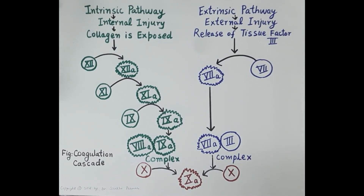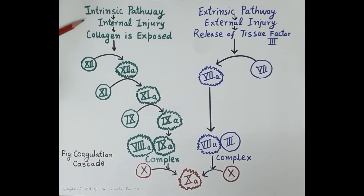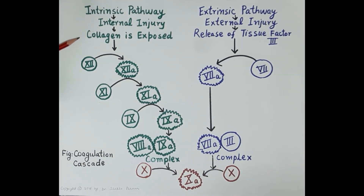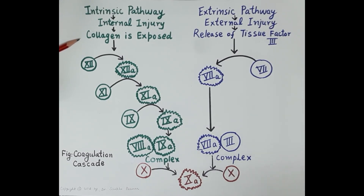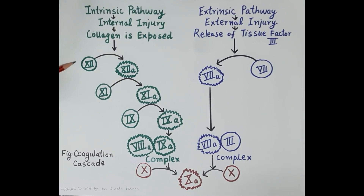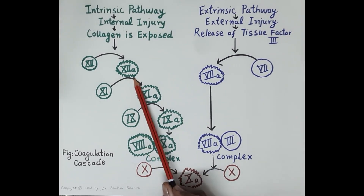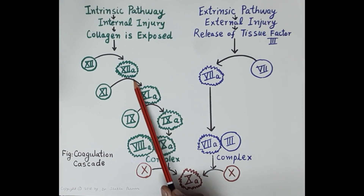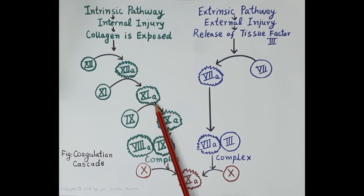Clotting is initiated by two pathways: the intrinsic pathway and the extrinsic pathway. The intrinsic pathway is initiated due to internal injury to the wall of the blood vessel. Due to this injury, the subendothelium is damaged and collagen is exposed. When platelets come in contact with this collagen they get activated, and these activated platelets activate clotting factor 12 to 12a — where 'a' stands for activated. 12a further activates factor 11 to 11a.